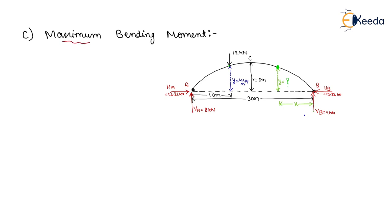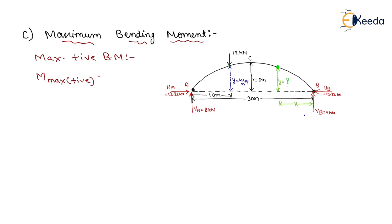For the maximum bending moment: the maximum positive bending moment generally lies below the applied load, that is below the 12 kilonewton load. Therefore, the maximum positive bending moment equals M at 10 meters, which was already calculated as 25.69 kilonewton meters.